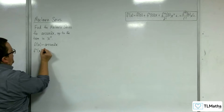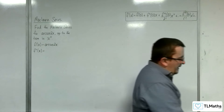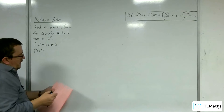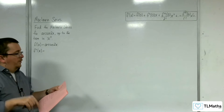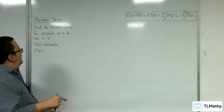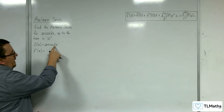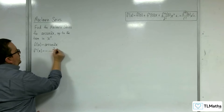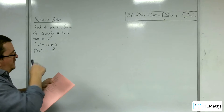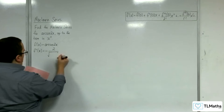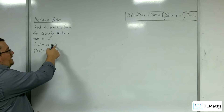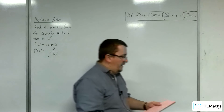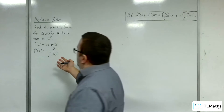I need to differentiate this. The derivative of arccos(x) is in your formula booklet — it's minus 1 over the square root of 1 minus x squared. Because we've got 2x, the derivative of the inside comes outside using the chain rule. So we get minus 2 over the square root of 1 minus 4x squared — you've got to square the 2x. That would be our first derivative.